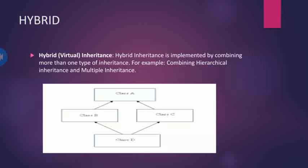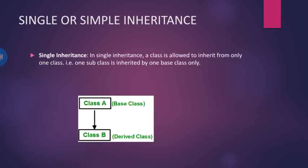The last type of inheritance is hybrid inheritance. Hybrid means a combination of any two inheritances — implemented by combining more than one type of inheritance. For example, combining hierarchical and multiple inheritance. In the diagram, classes A, B, C, and D are combined using two inheritance types: hierarchical and multiple. This is a very important topic, and in later videos we will do programs on inheritance, so it is important to know the basics of all types.